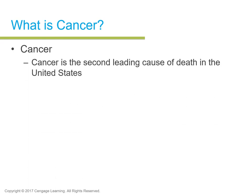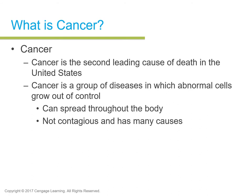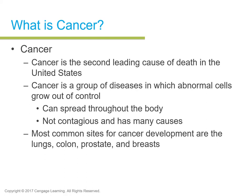Cancer is the second leading cause of death in the United States — it has climbed significantly in the 21st century. It is a group of diseases in which abnormal cells grow out of control and can spread throughout the body. It is not contagious and has many causes — some environmental, some dietary, some genetic. The most common sites for cancer development are the lungs, colon, prostate, and breast.